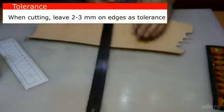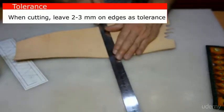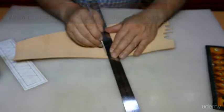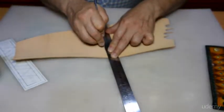When you cut the piece, take 2-3 mm from each side as a tolerance. Because when you do the embossing, the leather will deform a little bit. After embossing, we will do the finishing of the edges.